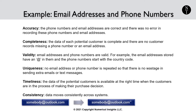Accuracy, in this case, implies that the phone numbers and email addresses are correct and there was no error in recording these phone numbers and email addresses. Completeness means that the data of each potential customer is complete and there are no customer records missing a phone number or an email address.